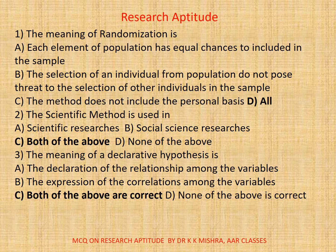Question 2. A scientific method is used in: a. Scientific researches. b. Social science researches. c. Both of the above. The correct option is c. Both of the above.